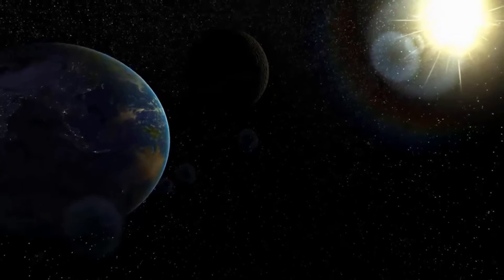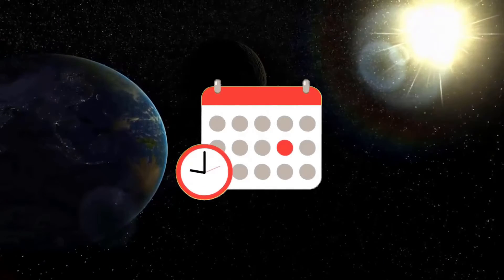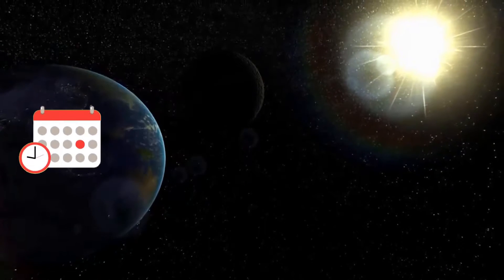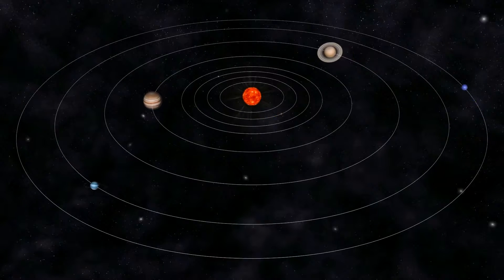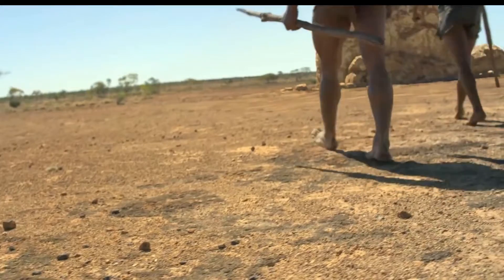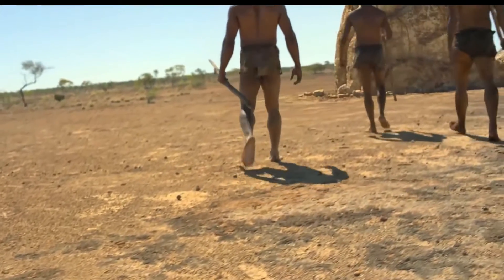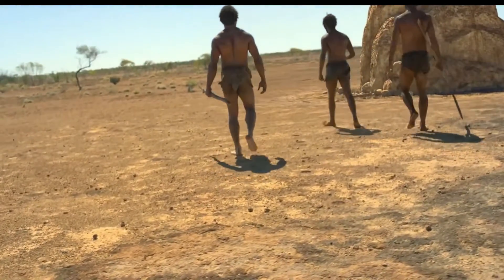To put this in perspective, if we scale this down to fit in a single calendar year with the Big Bang happening on January 1st, our solar system doesn't appear until early September, with the first humans appearing on December 31st, 7 minutes before midnight.